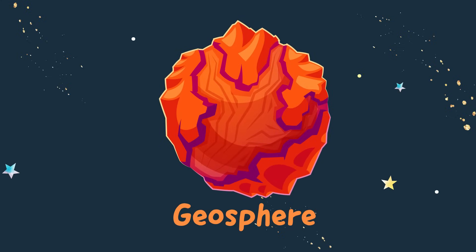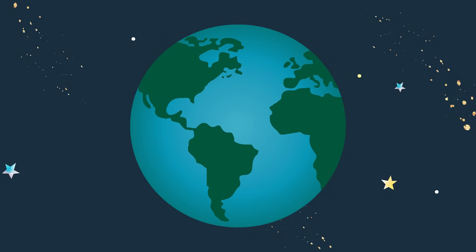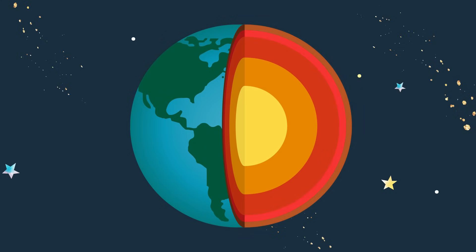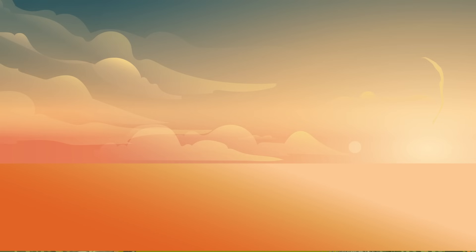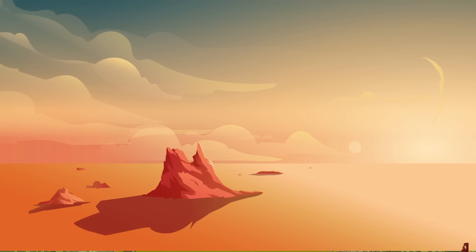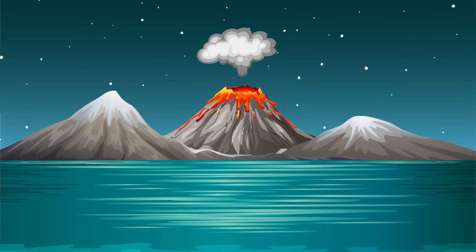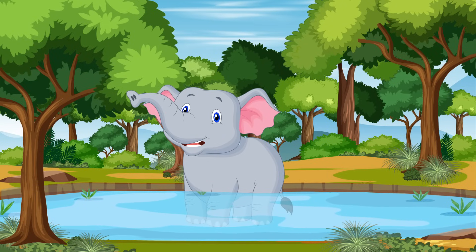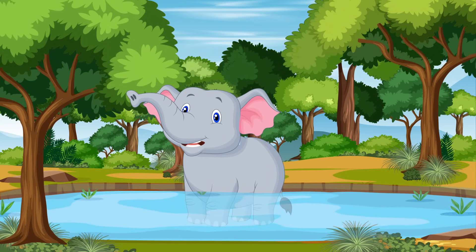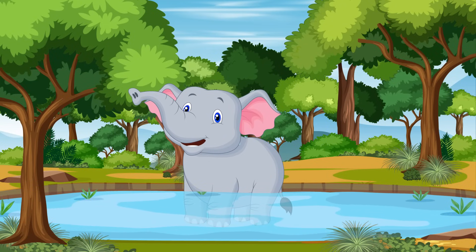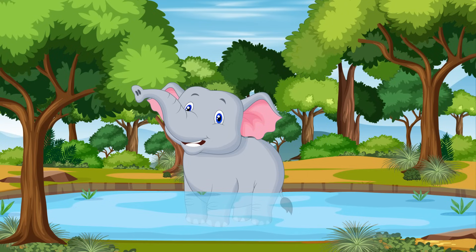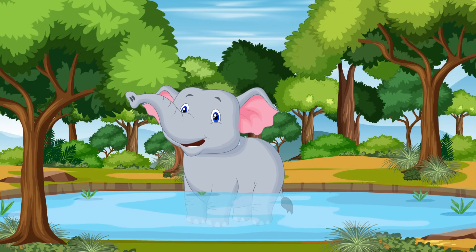Let's start with the geosphere, which is the outermost solid layer of the earth. It's made up of the crust and the top part of the mantle. Sand, rocks, mountains, canyons, ocean floors, and even magma are all part of the geosphere. I have a friend with a geosphere collection. Actually, it's just rocks, but it sure sounds cooler when you call them geosphere.